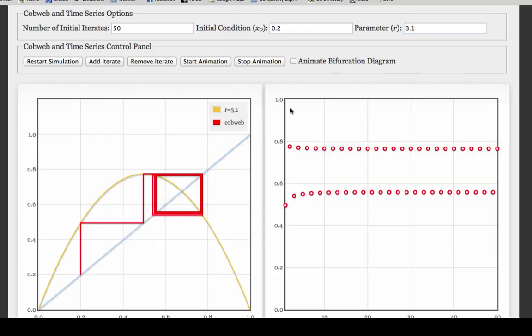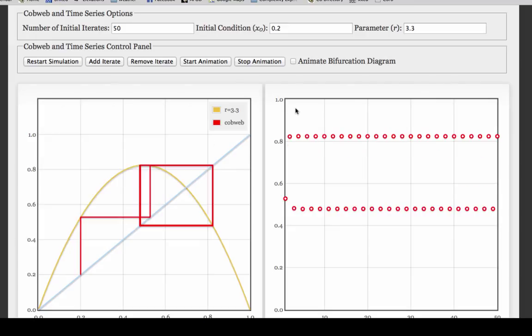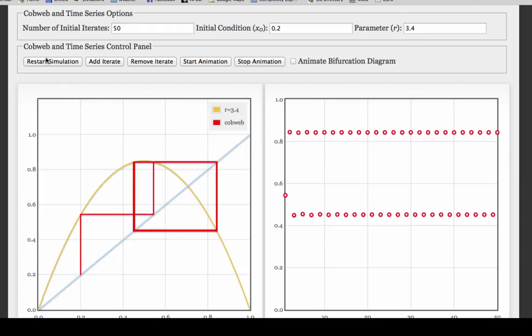Here's what that looks like on the return map. As we raise r further, the 2-cycle gets bigger and bigger. Here's 3.3, here's 3.4. And at a certain point, we get a 4-cycle.